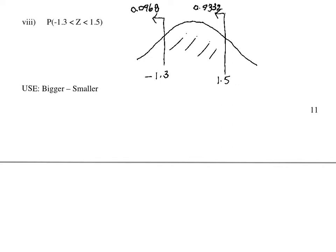From the tables, at negative 1.3, we read off the table the area to the left is 0.0968.